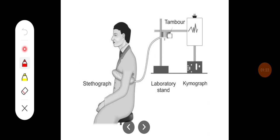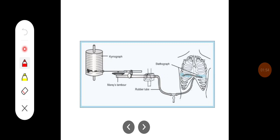As you can see, the stethograph is tied over the chest. When the person inspires, the volume in the corrugated tube increases and pressure decreases, creating a negative pressure in Marey's chamber. That is how the lever moves in a downward direction, so inspiration is always recorded as a downstroke. When the chest expands, the negative pressure created in Marey's chamber records a downward deflection on the moving kymograph, and vice versa.